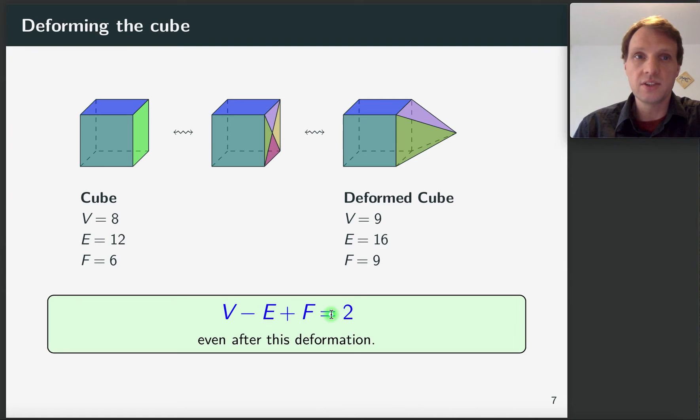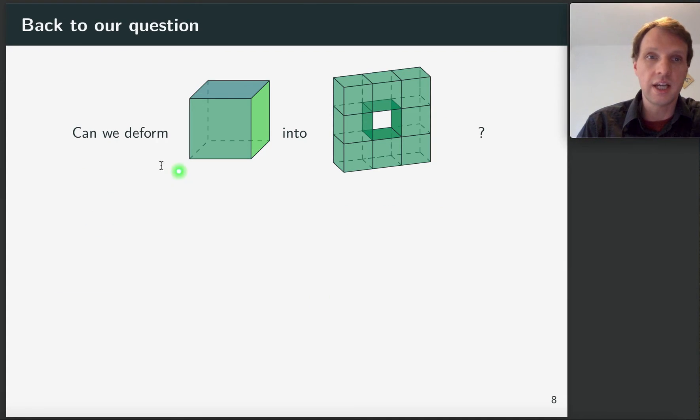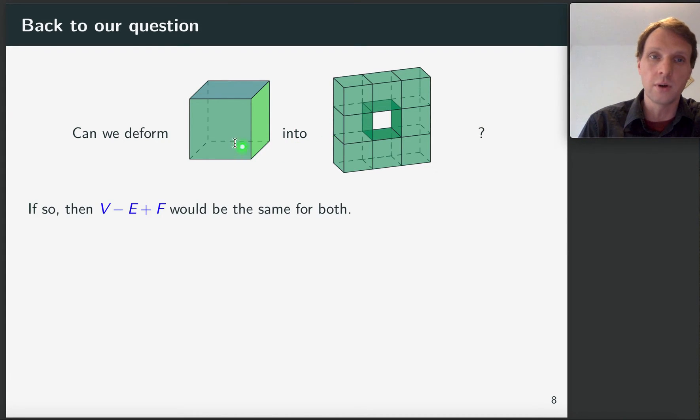And that brings us back to our original question. Can we deform this cube into this doughnut here? Because how we can approach this question is we can just compute the numbers for both of them. And if we can deform the cube into the doughnut, then the numbers are equal, right? If we can deform one into the other, the numbers will be the same.